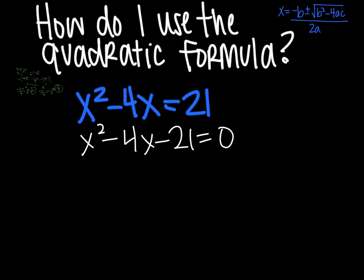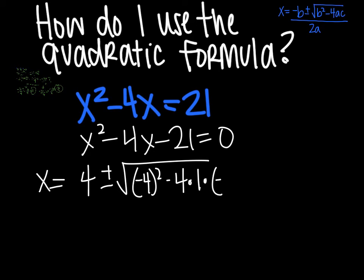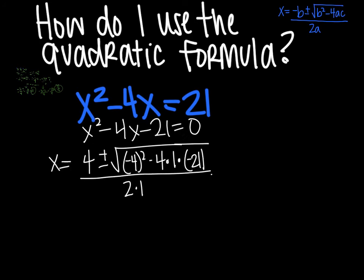I use x equals the opposite of b. So b is negative 4. So 4 plus or minus the square root b squared would be negative 4 squared minus 4 times a which is 1 times c which is negative 21, all divided by 2 times 1.